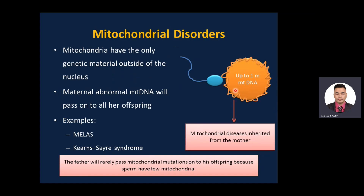Mitochondrial disorders are transmitted mainly from the mother — uniparental inheritance. The egg has from 100,000 up to 1 million mitochondrial DNA copies, while sperm has very few. So it is rare for the father to pass abnormal mitochondrial DNA to offspring. The mother will pass mutated mitochondrial DNA to all of her offspring. Mitochondrial diseases include MELAS — mitochondrial encephalopathy, lactic acidosis, and stroke — and Kearns-Sayre syndrome, which involves progressive ophthalmoplegia and cardiac defects.